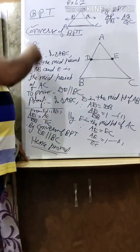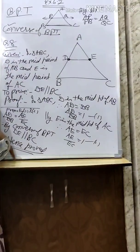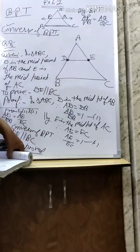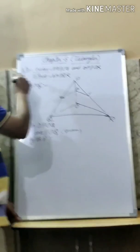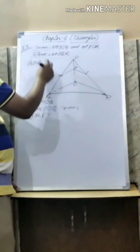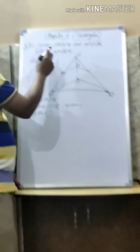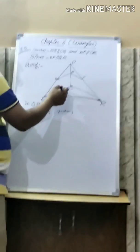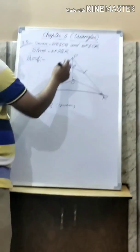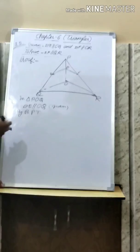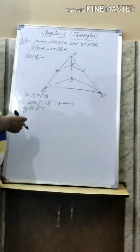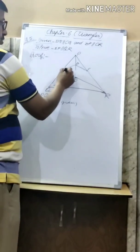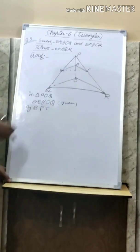By using BPT and the converse of BPT, we can complete this exercise. In question number 5, the figure shows DE parallel to OQ and DF parallel to OR. We have to prove EF parallel to QR.